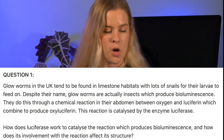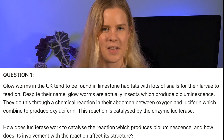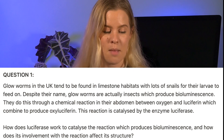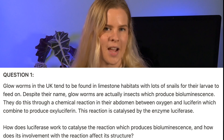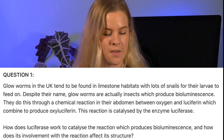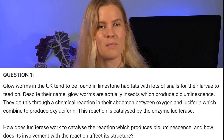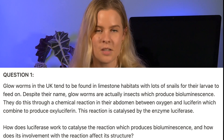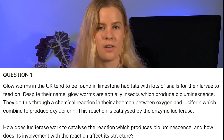After you've watched this video, maybe go on and do some slightly longer past paper questions, putting what you've learned into practice. So question one. Glow worms in the UK tend to be found in limestone habitats with lots of snails for their larvae to feed on. Despite their name, glow worms are actually insects which produce bioluminescence. They do this through a chemical reaction in their abdomen between oxygen and luciferin, which combine to produce oxy-luciferin. This reaction is catalyzed by the enzyme luciferase. How does luciferase work to catalyse the reaction which produces bioluminescence, and how does its involvement with the reaction affect its structure?